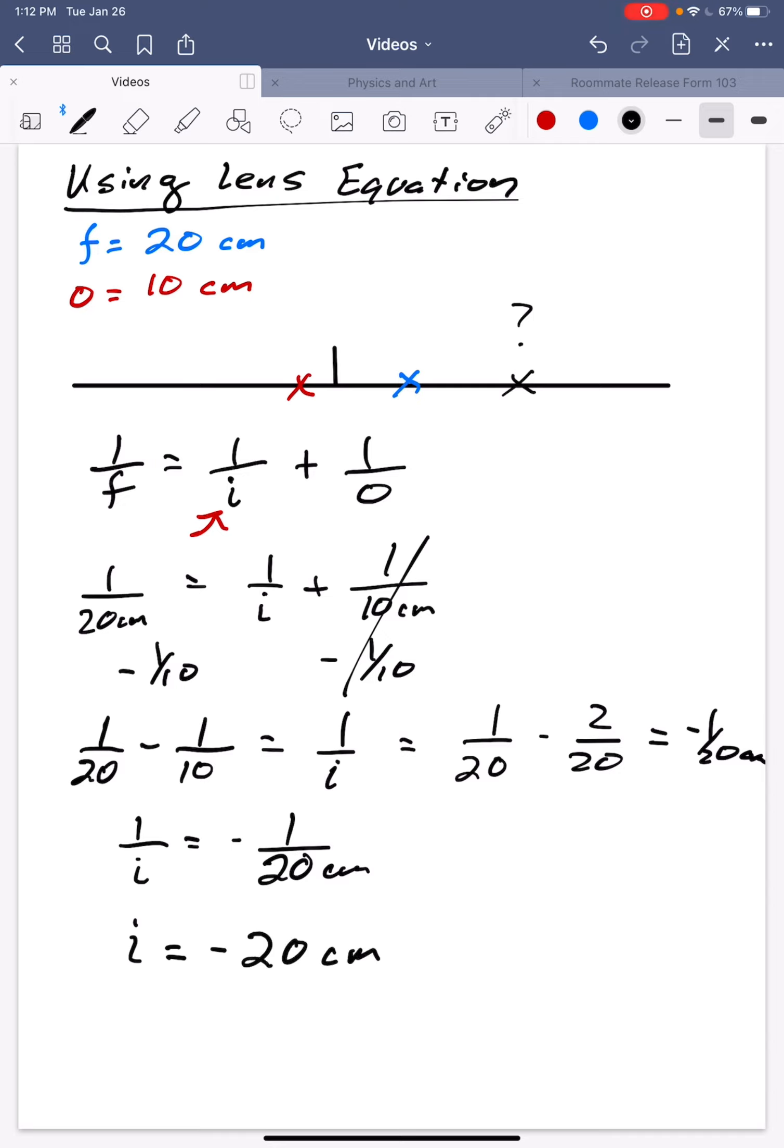So in this case, what I have is a virtual image, the image is actually on this side. And it is virtual because it's negative, so we talked about the sign conventions.